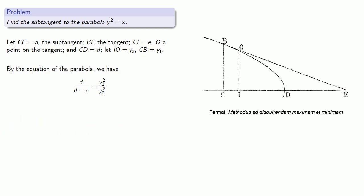Now since this line is tangent, O has to be exterior to the parabola, so OI must be greater than y2. And so that says d over d minus e is greater than y1 squared over OI squared. Now by similar triangles, CB is to OI as EC is to EI.